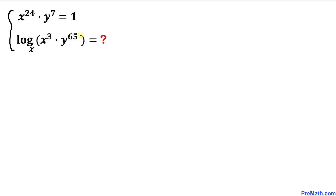Welcome to Pre-Math. In this video tutorial we have a system of equations. If x power 24 times y power 7 equals 1, find the value of log of x power 3 times y power 65 with base x. Let's go ahead and get started with the solution.